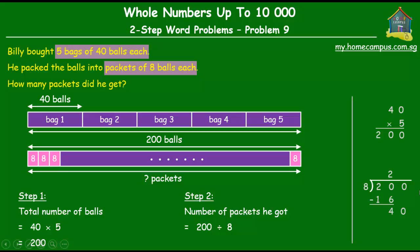Then you bring down the 0, the 0 ones and you have 40. Now 8 goes into 40 five times and leaves a remainder of 0. So the quotient here 25 gives you the number of packets that he got.